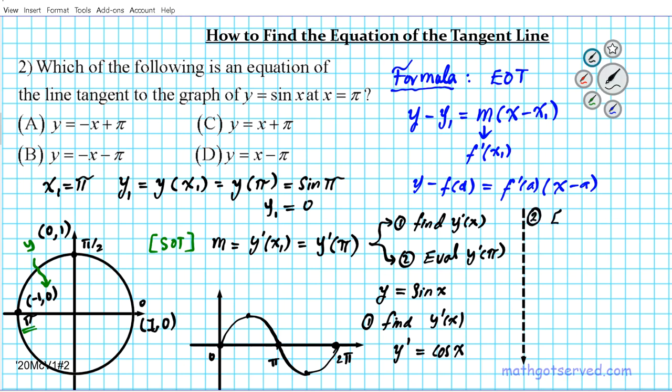Now let's do part two, which is to evaluate the derivative at the specified X value, which is pi. So Y prime is cosine X. So Y prime evaluated at pi is cosine pi.